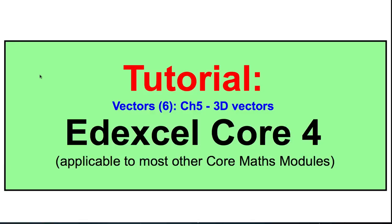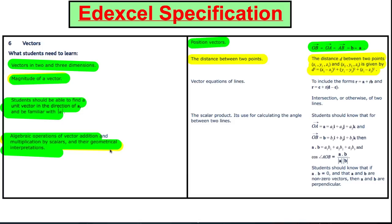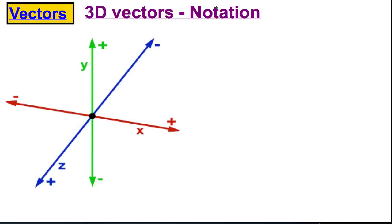Now this is just a reminder — it's for the Edexcel Core 4 course, but it's applicable to most other A Level modules. Looking at what Edexcel say, we've done everything in green. They now want the distance between two points given by the following formula, so that's what we're going to cover in this video, and we'll talk about what three-dimensional vectors look like. Here's an introduction to the notation.